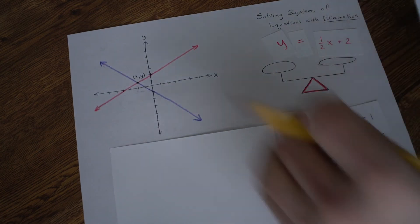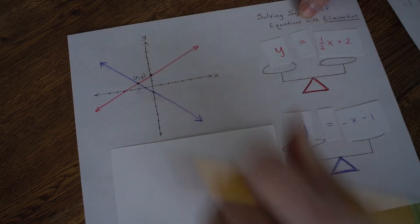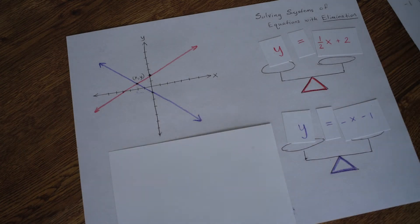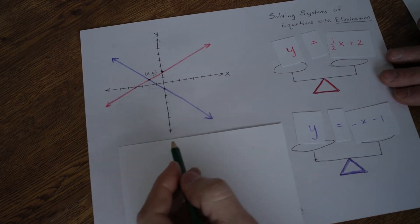Now everything changes signs. So negative 1 times y is negative y. Negative 1 times this is negative 1 half x. And negative 1 times 2 is negative 2. So everything just changed signs.